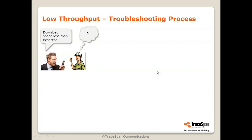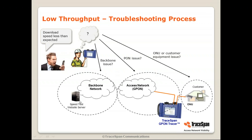In the case of low throughput in a G-PON network, the source of the problem can be anywhere in the network between the server and the customer. It can be at the customer site — the ONU dropping packets, the Wi-Fi router connected to the ONU, or the PC being too slow to accept the maximum throughput. It can be in the PON itself, in the backhaul, or in the server. The first thing you need to determine is where in the network the problem comes from, and then troubleshoot it accordingly.